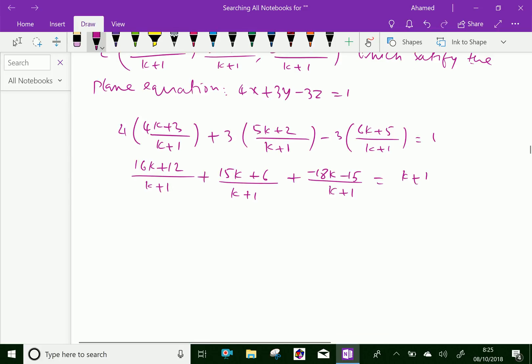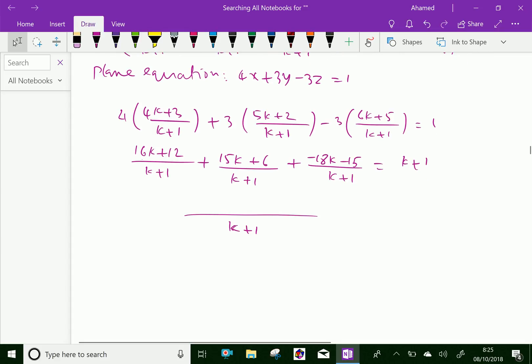Then 16k plus 15k is 31k, 31k minus 18k is 13k. 13k plus 3 equal to 1, which gives k equal to minus 1 over 6.